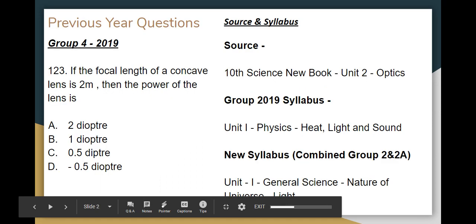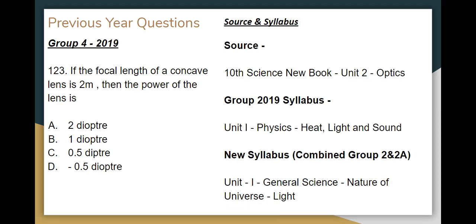In 2019, the focal length of a concave lens is 2 meters, then the power of the lens — that is one question. If you look at the source of this question: 10th standard science new book, Unit 2 Optics. In 2019, Group 4 syllabus, Unit 1 physics — heat, light and sound are covered, meaning light is one of the covered topics. Now let's look at the new syllabus: combined Group 2 syllabus. Unit 1 general science — the nature of the universe is the key, and light is one of the topics.